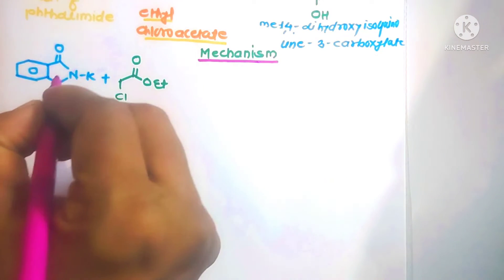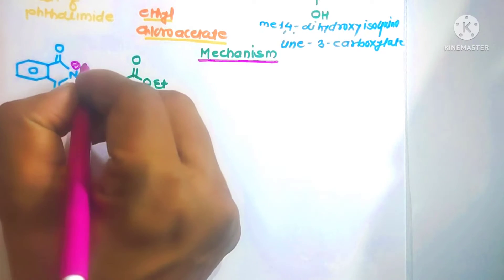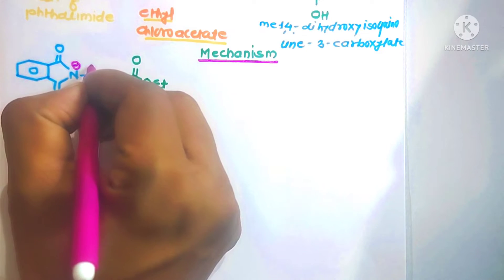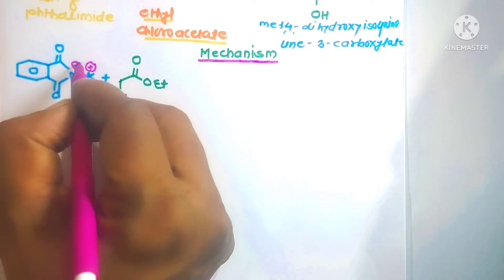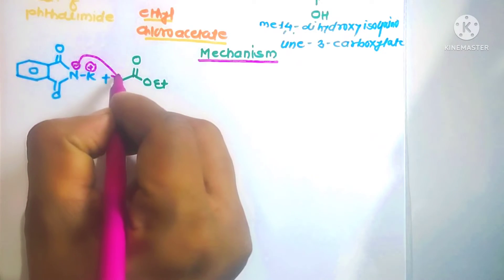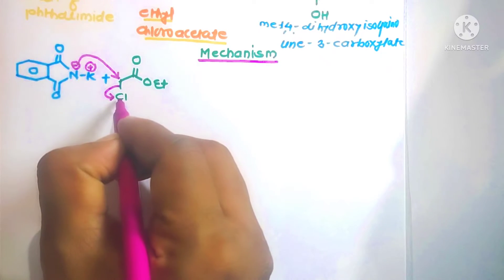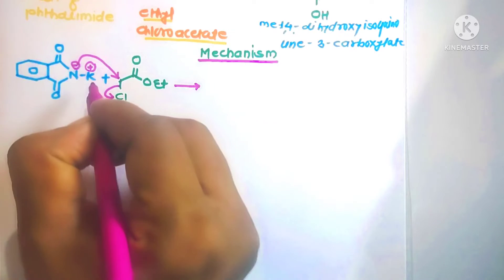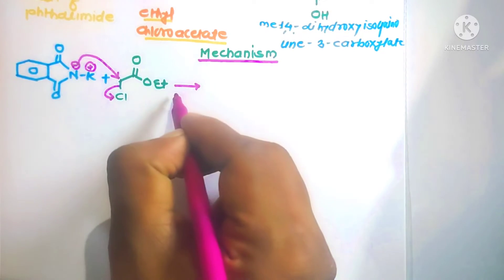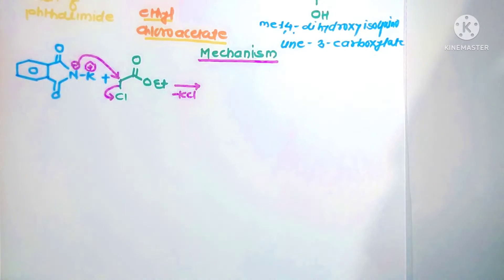The potassium salt of phthalimide has a nitrogen containing a non-bonded pair of electrons. The nitrogen acts as a nucleophile and donates electrons toward the carbon atom, then Cl⁻ eliminates with its bonding pair of electrons. There is elimination of KCl to form a new molecule.